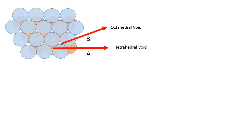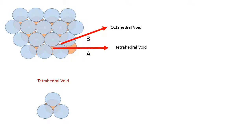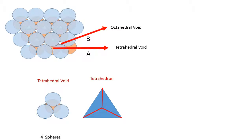Now let us discuss about these voids. The first one being the tetrahedral void. The tetrahedral void consists of a colored sphere and it has 3 blue spheres above it. If I join the centers of the blue spheres along with the colored sphere, what I get is basically a tetrahedron, and therefore this is a tetrahedral structure consisting of 4 spheres.